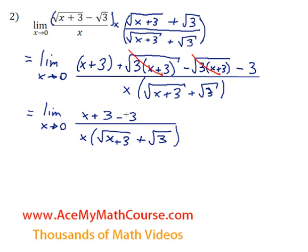Now look at this. Up top, we have 3 minus 3, which is 0. So they're gone. They're gone. Fantastic.